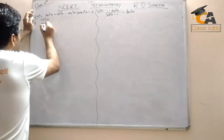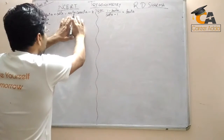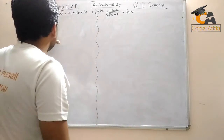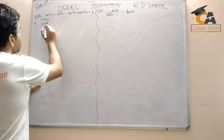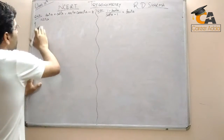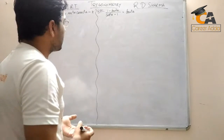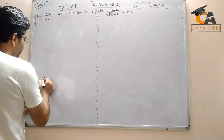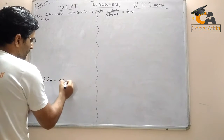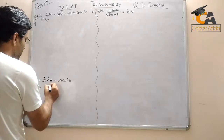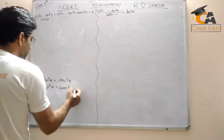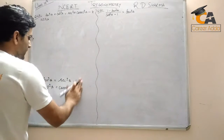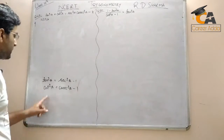We have sine square a. Here we can see the answer in the first step. Using the identity: 1 plus tan square a is equal to sec square a, and 1 plus cot square a is equal to cosec square a. So we can say sec square a minus 1 is equal to tan square a, and cosec square a minus 1 is equal to cot square a.